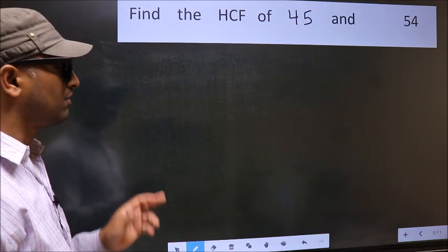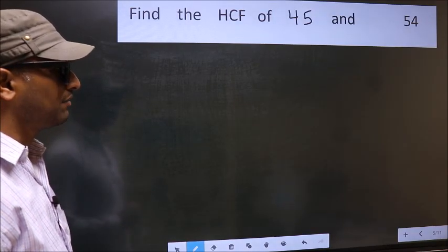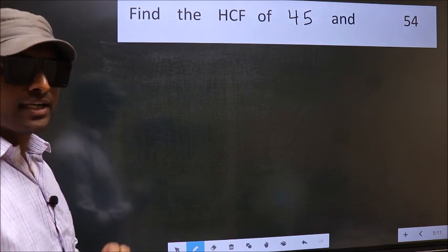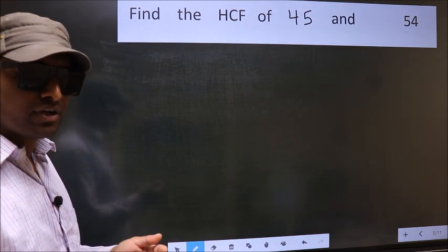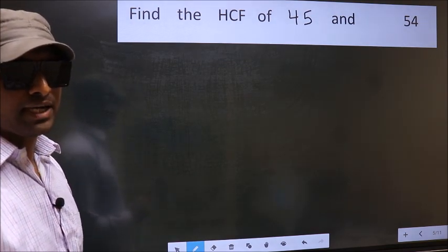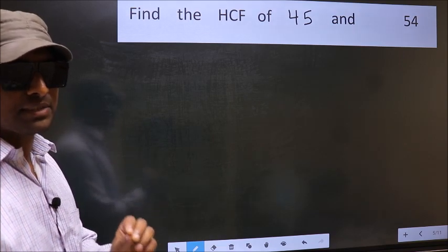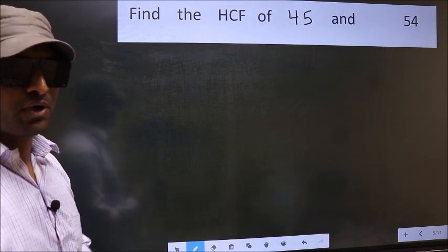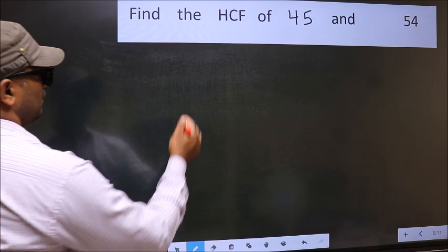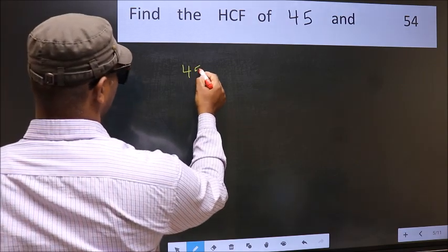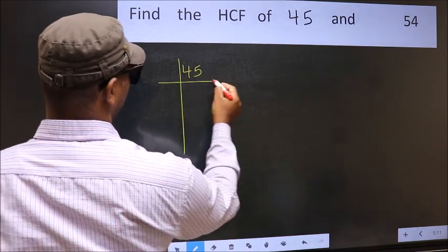Find the HCF of 45 and 54. To find the HCF, we should do the prime factorization of each number separately. What I mean is 45 and 54.